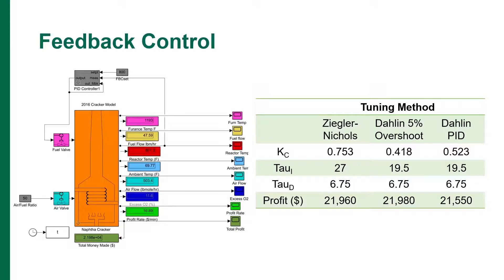The three tuning methods we used to compare the parameters are tabulated on the right, where the obtained tuning constants and daily profits are quantified. The Dahlen 5% overshoot method resulted in the higher daily profit, which was found to be $21,980. Furthermore, this resulted in the least aggressive control, as can be shown in that controller gain has the smallest value.